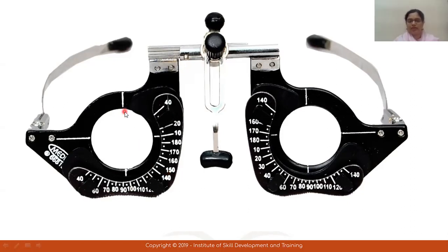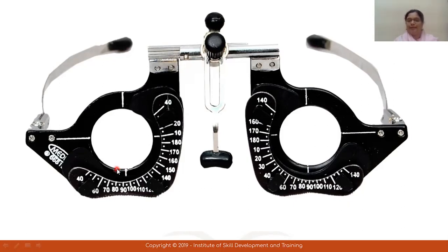Whenever you do refractions, you will put your spherical power into this chamber. After that, the cylinder power is put into the next chamber. You can also put your filter in a chamber. Use the back chamber so that the vertex distance will be reduced, and image magnification or minification will be reduced. So these are your trial frame compartments or chambers.